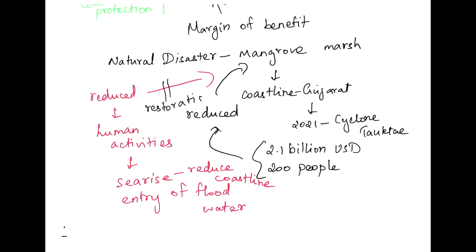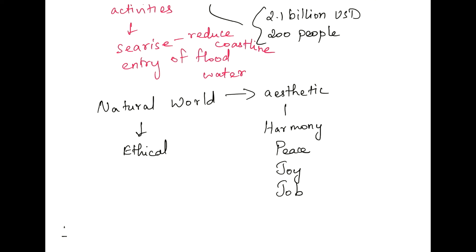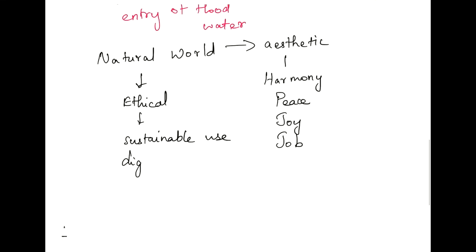Now describing the natural world as an aesthetic value will make it a harmony, peace, joy. As an ethical value it will have sustainable use, dignity of life and resources.